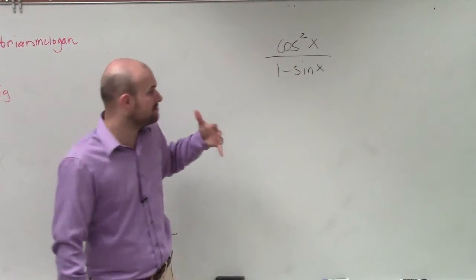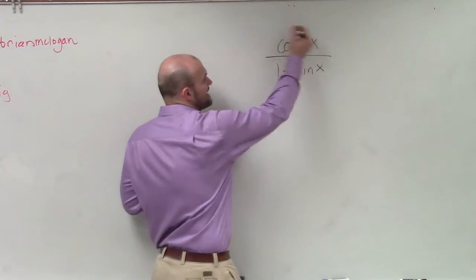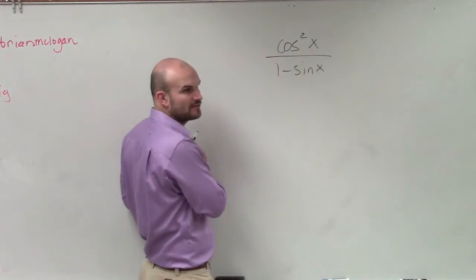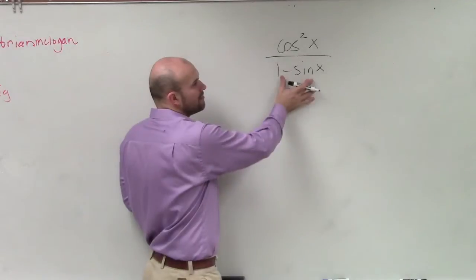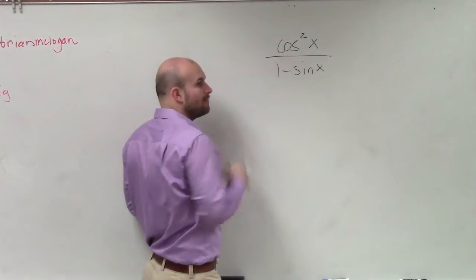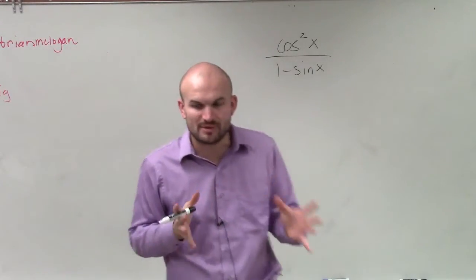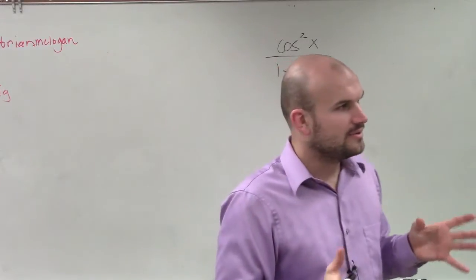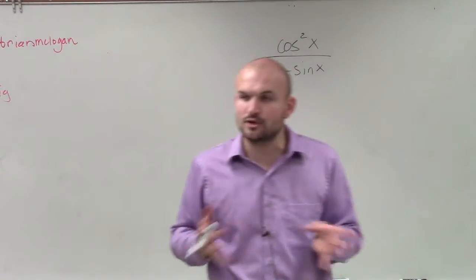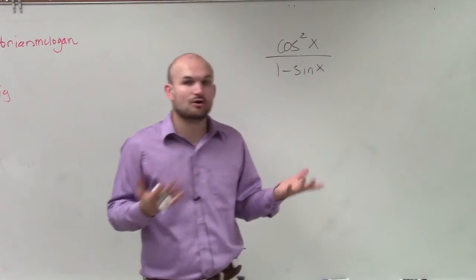And as of right now, another mistake students will do is they'll try to group the sine with the cosine and say, oh, it's just 1 over tan, 1 minus tangent. Remember, this whole thing is divided by 1 minus sine. So we can't break it up across addition and subtraction. We can only break up our denominator across multiplication.